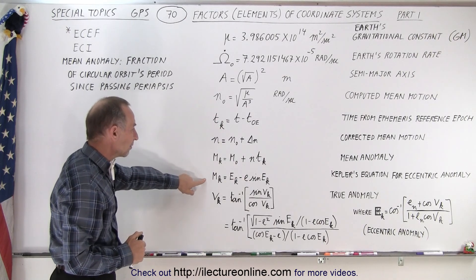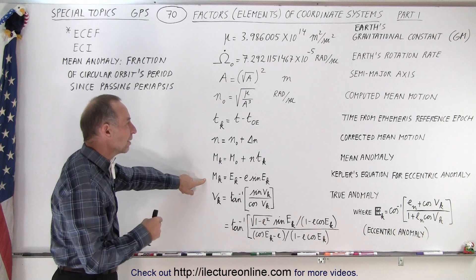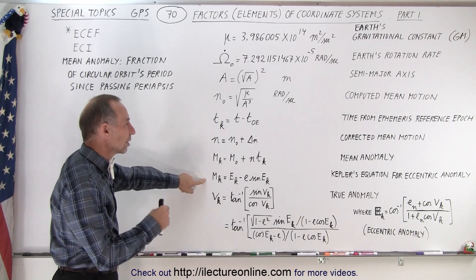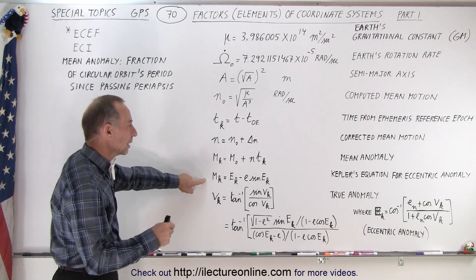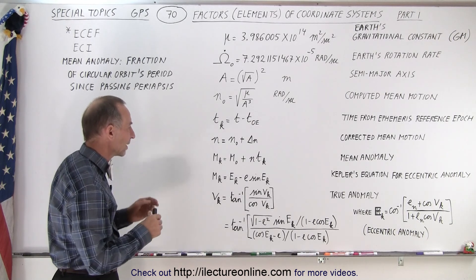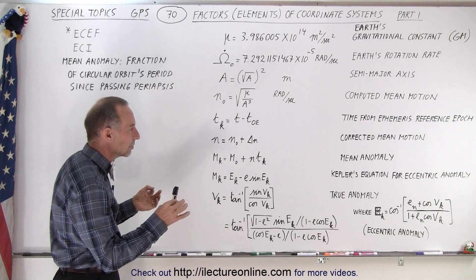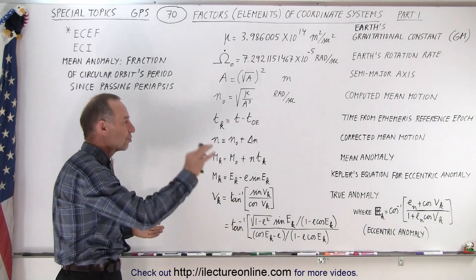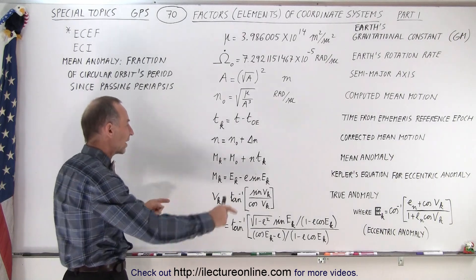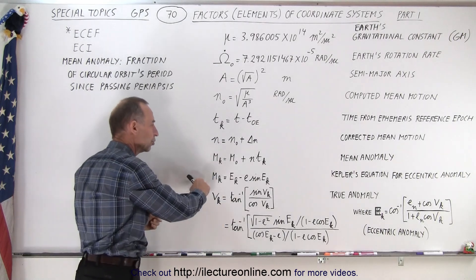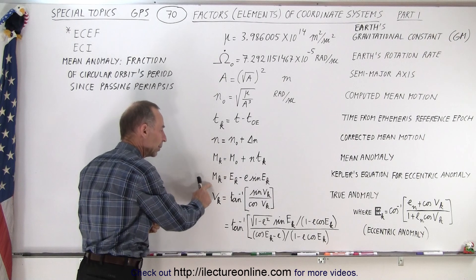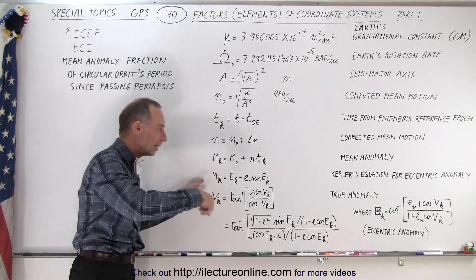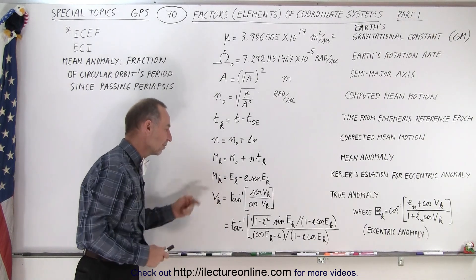We also have the M sub k based upon the eccentric anomaly. What we're trying to do here is calculate how the eccentricity affects that motion. There we have the calculated value, which can be done in an iterative process.